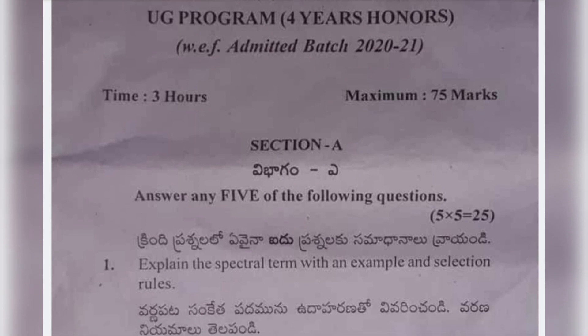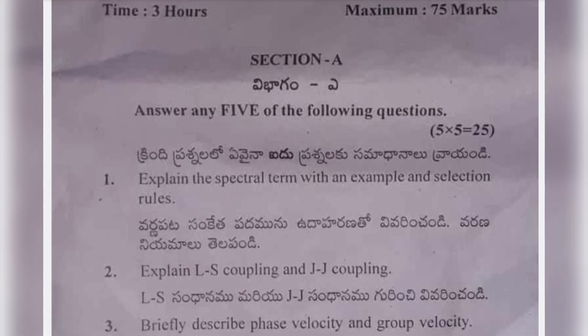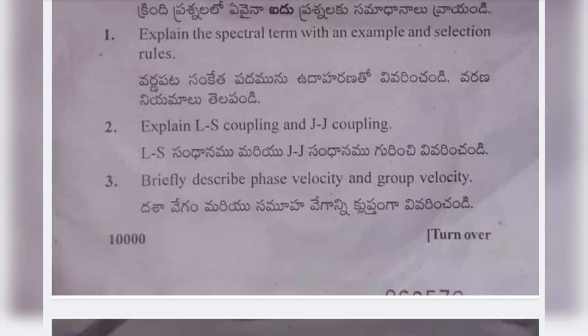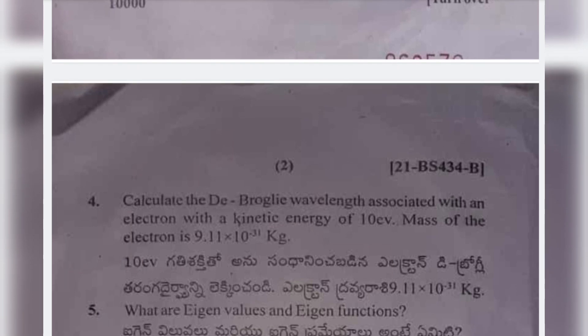Let's start with the short questions. First: explain the spectral term with an example and selection rules. Second: explain LS coupling and JJ coupling. Third: briefly describe phase velocity and group velocity. Fourth: calculate the de Broglie wavelength associated with an electron with a kinetic energy of 10 eV — mass of the electron is 9.11 × 10⁻³¹ kg.